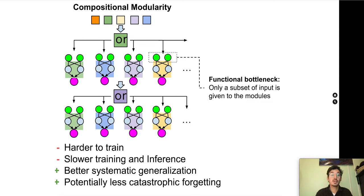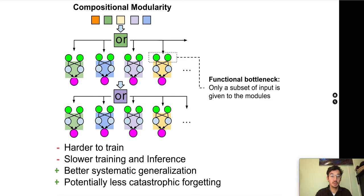While the mixture of experts paradigm is only limited to parallel subtask execution, the main advantage of compositional modularity is that it can potentially decompose a task into subtasks where the subtasks, learned by separate modules, can be executed both sequentially and in parallel.